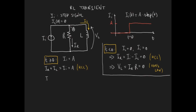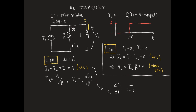IR is equal to VL over R by Ohm's law, but we know that VL in an inductor is given by the inductance L times the time derivative of IL. If we replace VL in the expression of IR, and then replace IR in the Kirchhoff's equation for currents, we get L over R times dIL/dt plus IL equal to A.